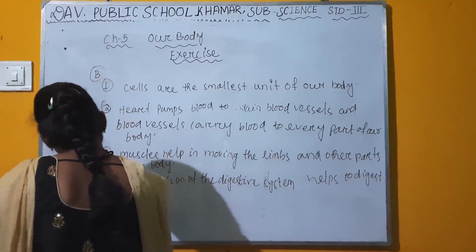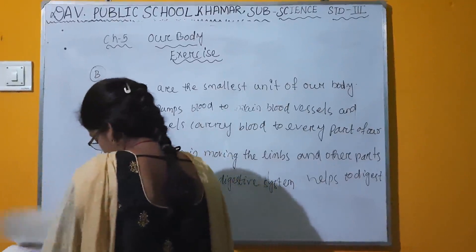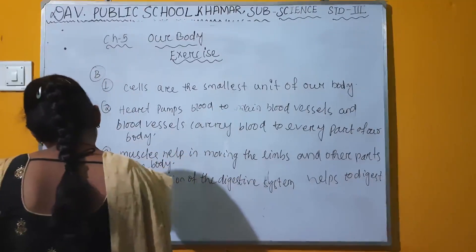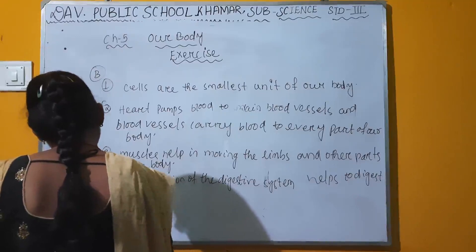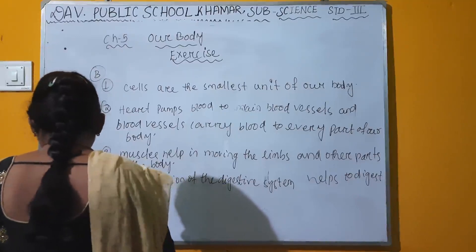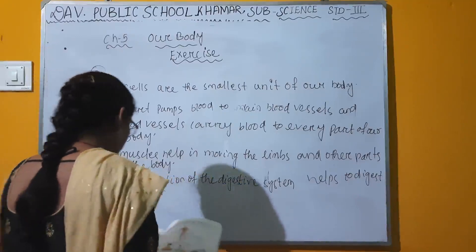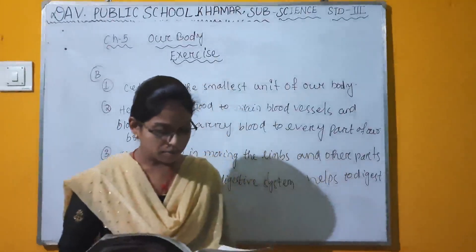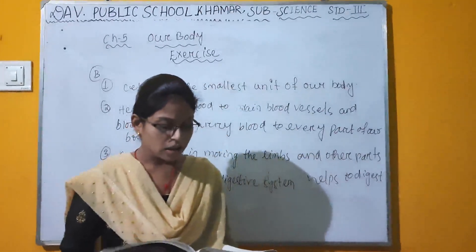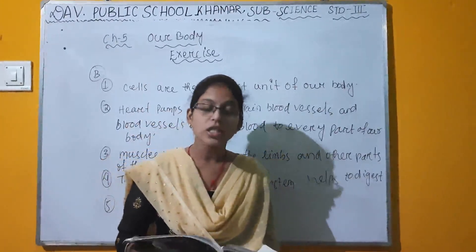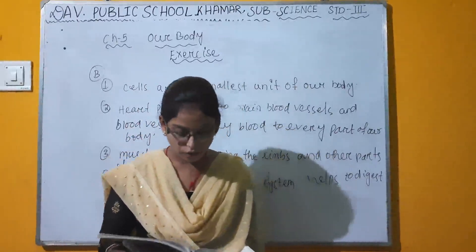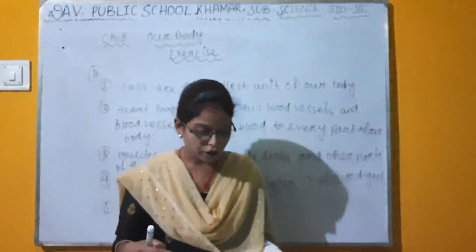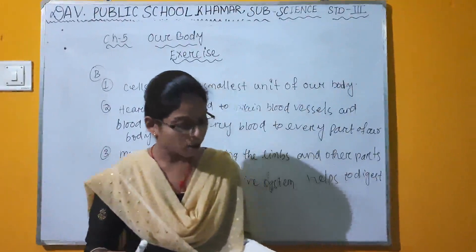Number five: mention two ways by which the skeletal system is useful for us. The skeletal system gives shape to our body and consists of all the bones and their joints. Bones protect the internal delicate parts of our body.